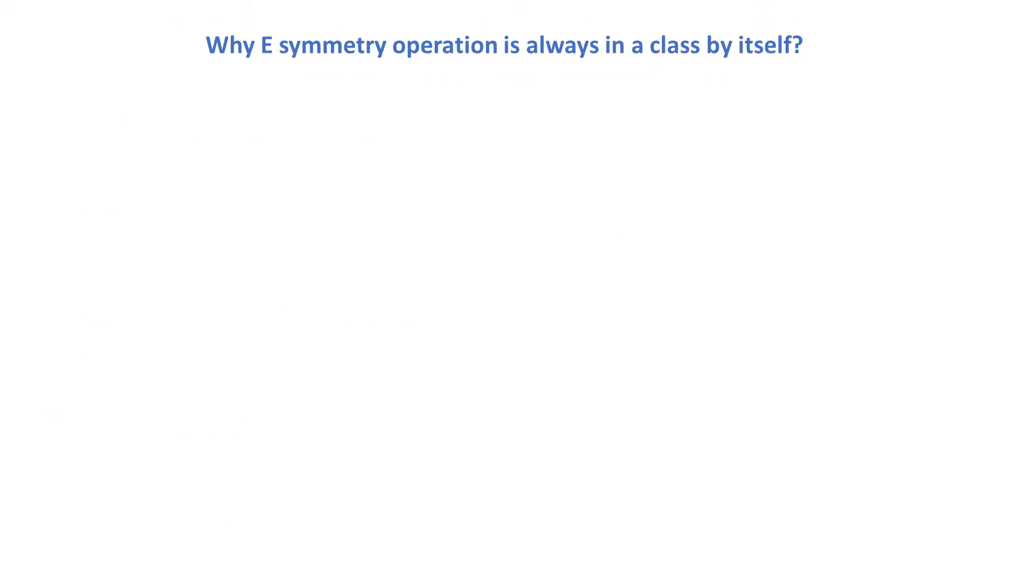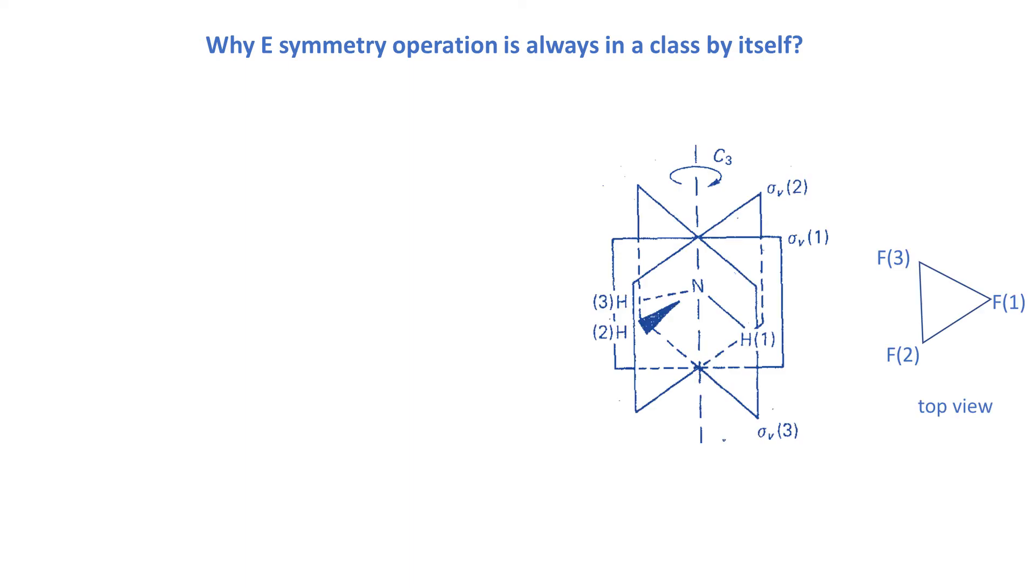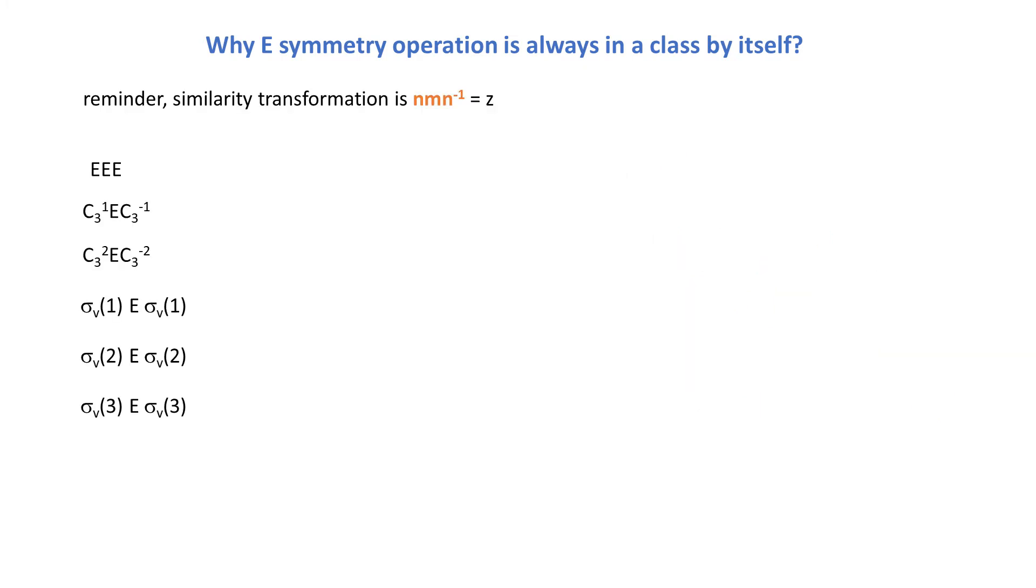Let's see why symmetry operation E is always in a class on its own. So let's take a group C3V as an example. We can work with ammonia, for instance. To find out if E is conjugate to any element in the group, we need to do a series of similarity transformations. So E is in the middle, is sandwiched by every other symmetry element in the group, including E itself.